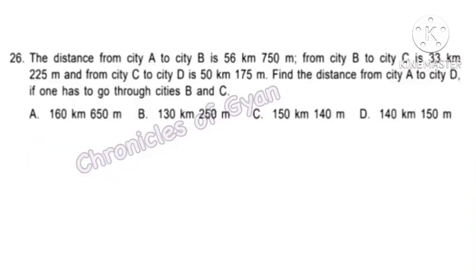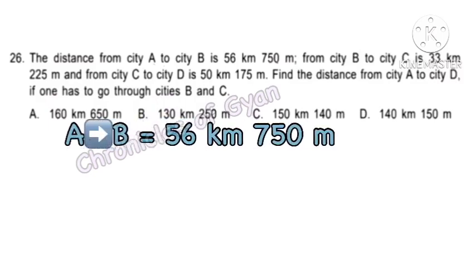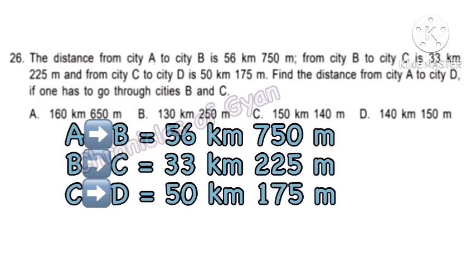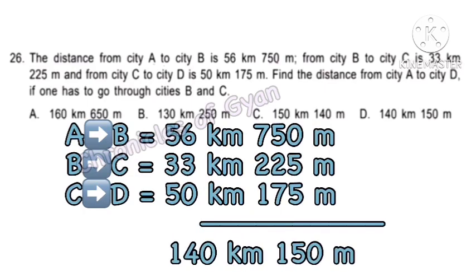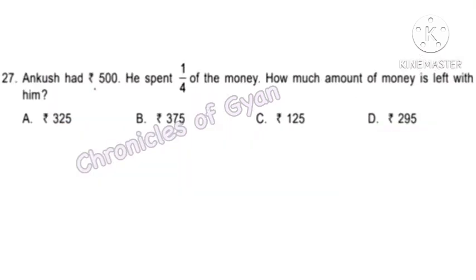Question 26. The distance from city A to city B is 56 km 750 m, from city B to city C is 33 km 225 m, and from city C to city D is 50 km 175 m. Find the distance from city A to city D through cities B and C. Adding all distances, we get 140 km 150 m — option D.